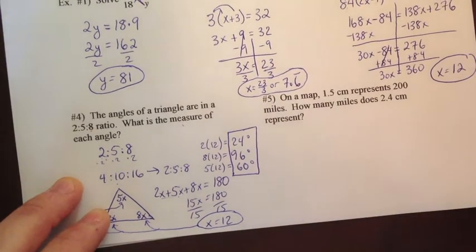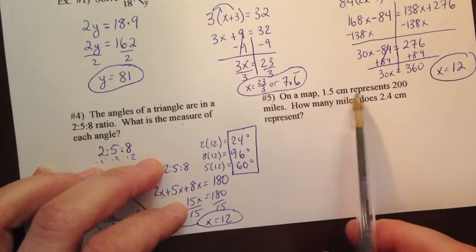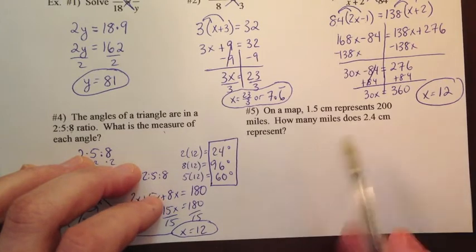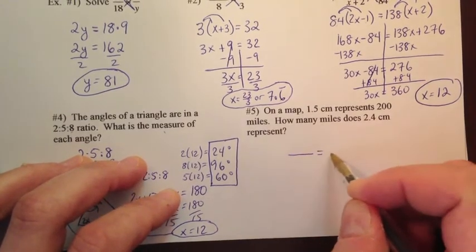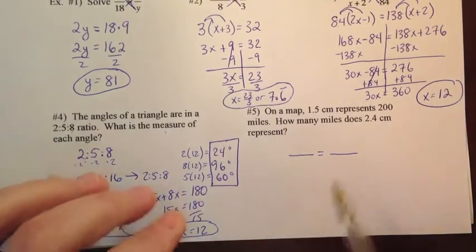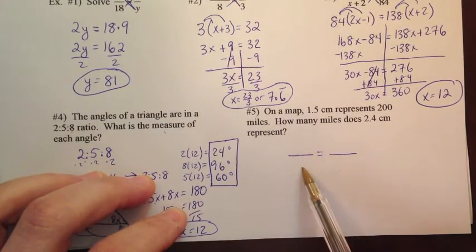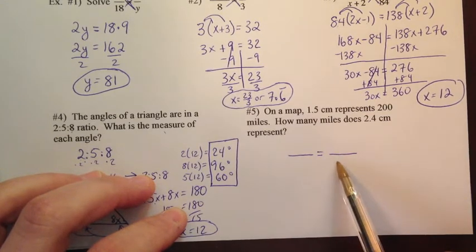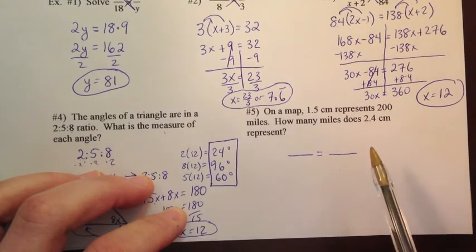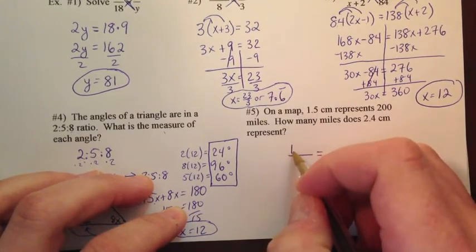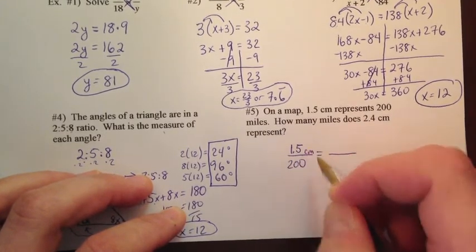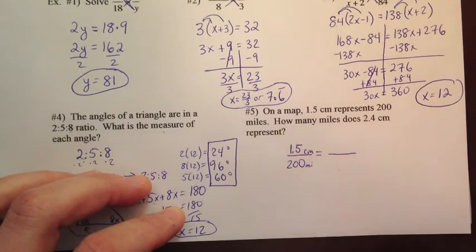Let's do one more here on the front. On a map, 1.5 centimeters represents 200 miles. How many miles does 2.4 centimeters represent? Well, when you are comparing values like this, you're making a comparison. Let's go ahead and make a proportion. A proportion has four pieces. A numerator and a denominator on the left. A numerator and a denominator on the right.